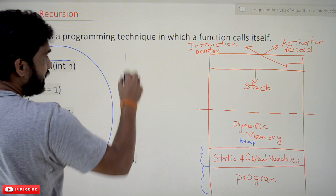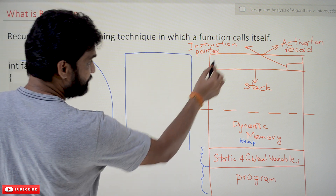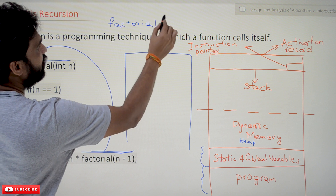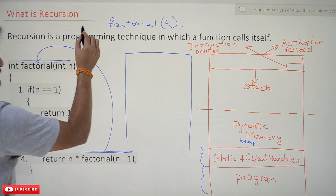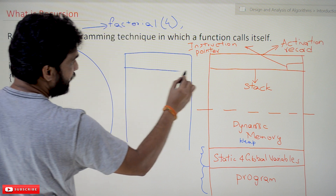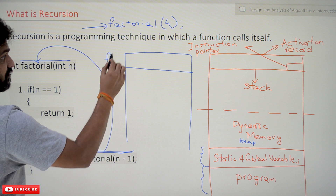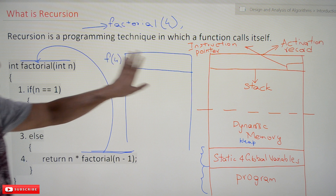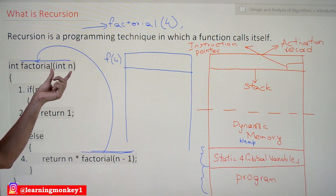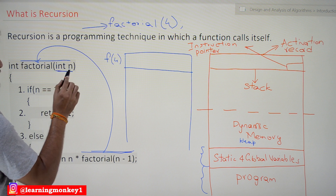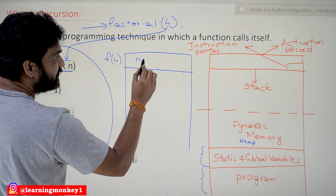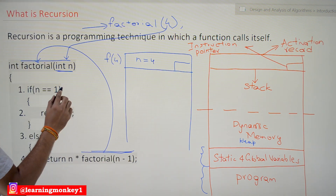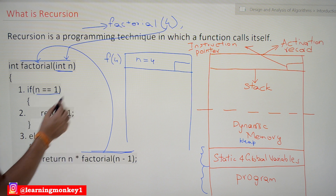Now we will take the stack part separately and understand how this factorial program executes. Assume that in the main function, factorial(4) is called. Whenever a function call is made, a new activation record gets created — this activation record is for f(4), meaning factorial of 4. The only variable in this function is n, so n = 4 gets stored here, along with the instruction pointer.